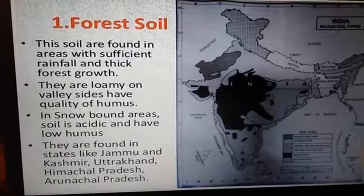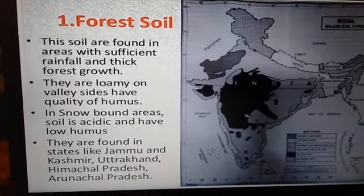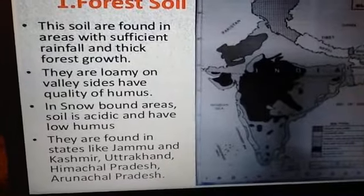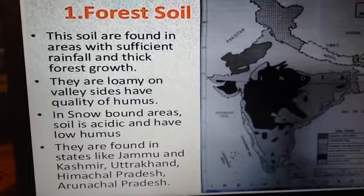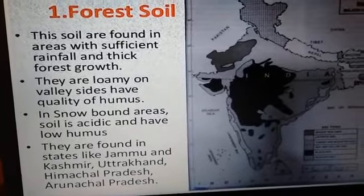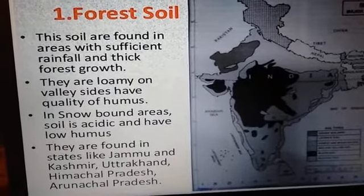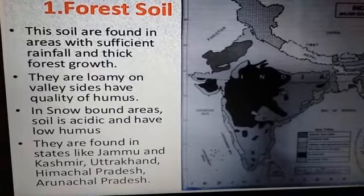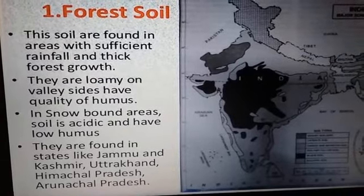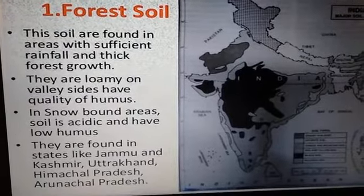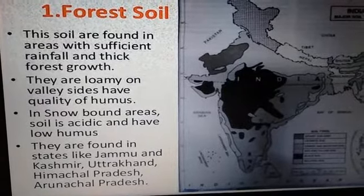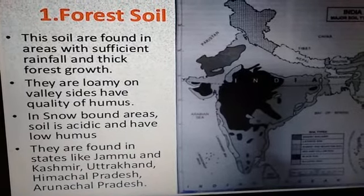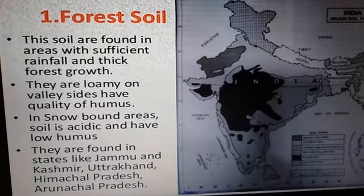The first one is forest soil. This soil is found in areas with sufficient rainfall and thick forest growth. They are loamy on valley sides and have good quality of humus.